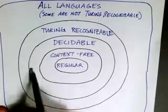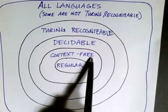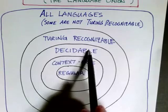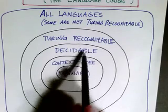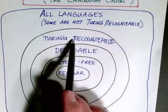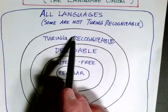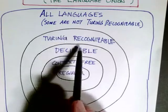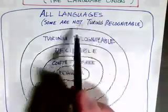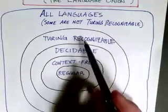Around regular languages we have context-free languages, and of course every regular language is also context-free. Then we have the class of decidable languages — every context-free language is decidable, and furthermore every decidable language is Turing-recognizable. But there are languages that are Turing-recognizable that are not decidable. And finally, we have the universe of all languages, and some of those are not even Turing-recognizable.